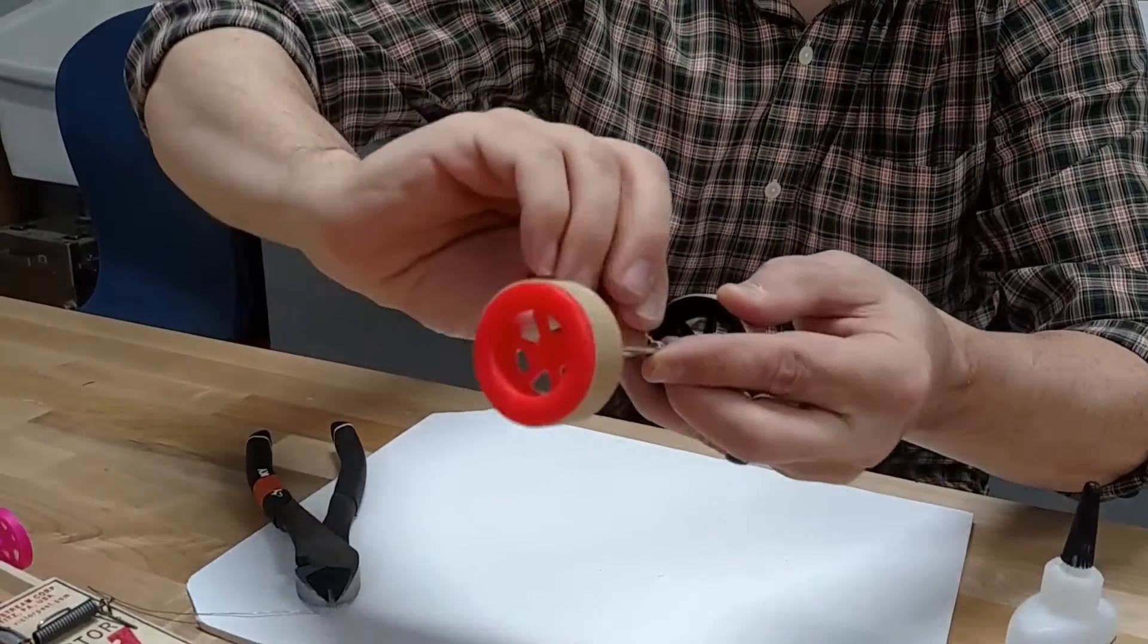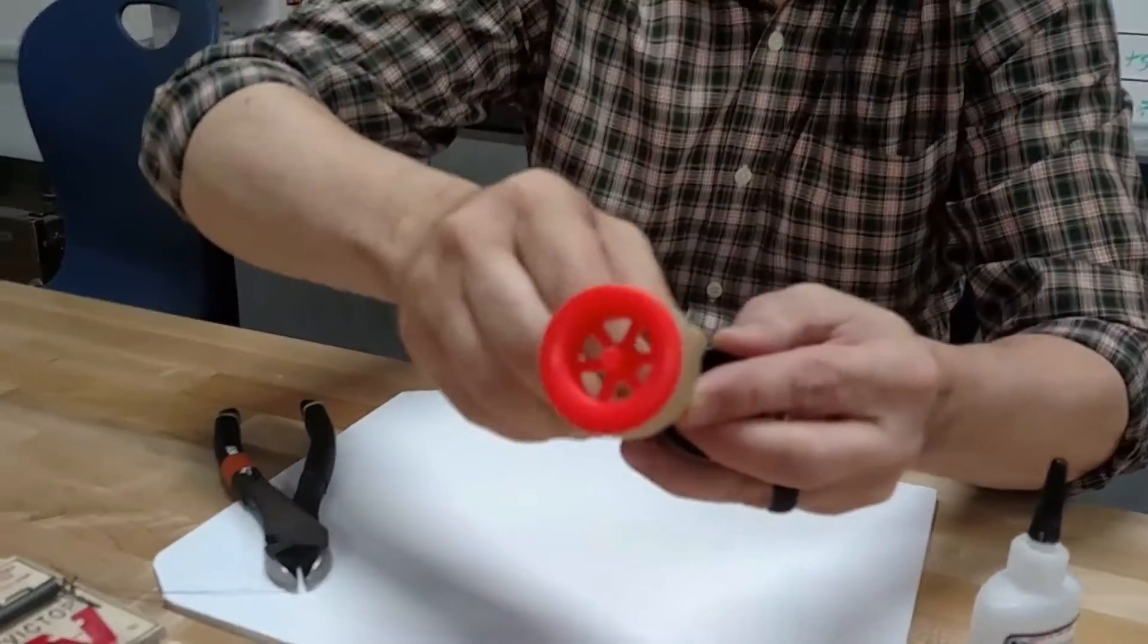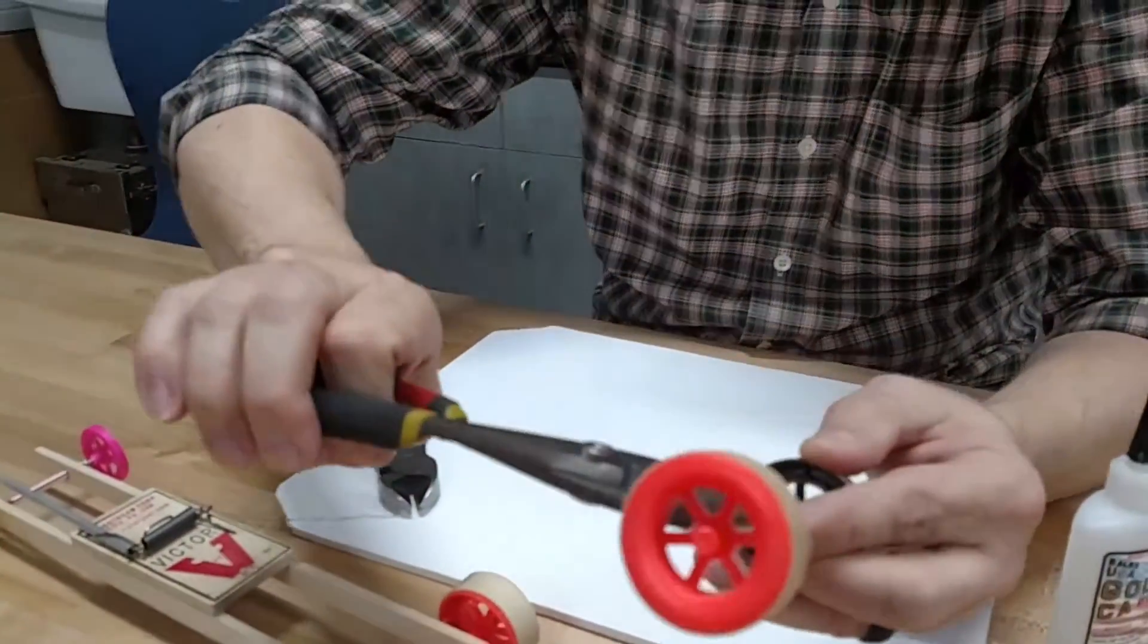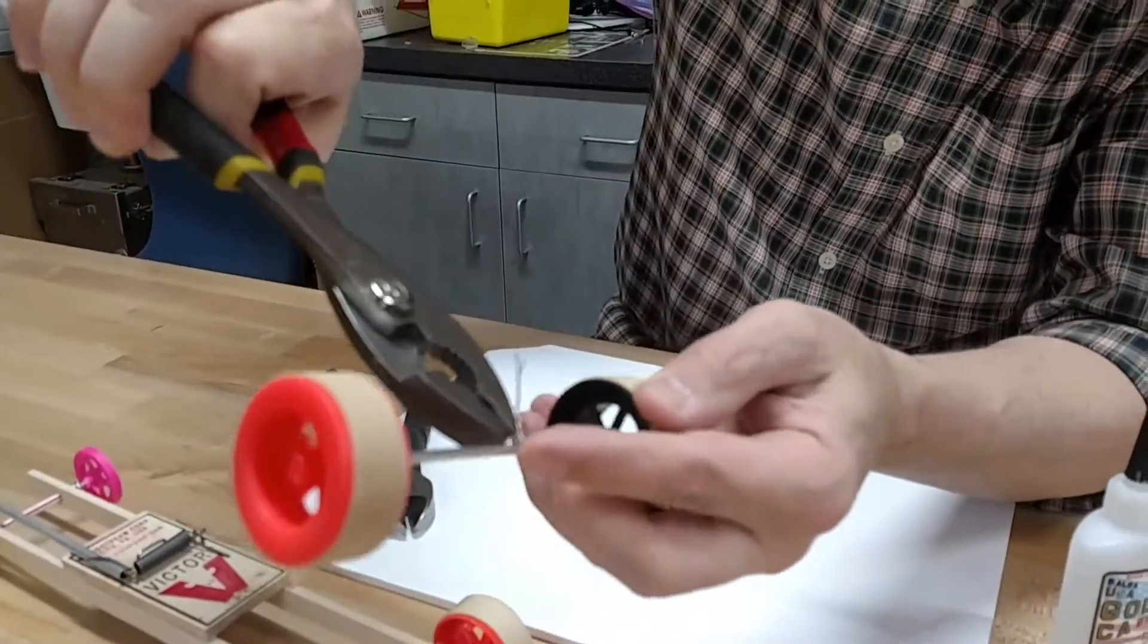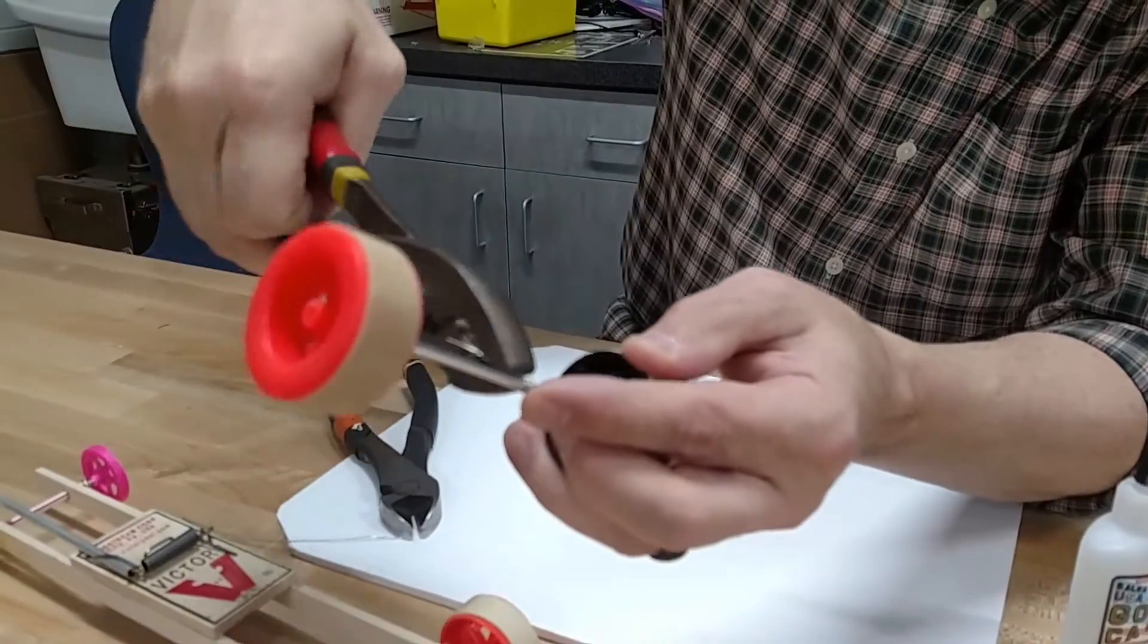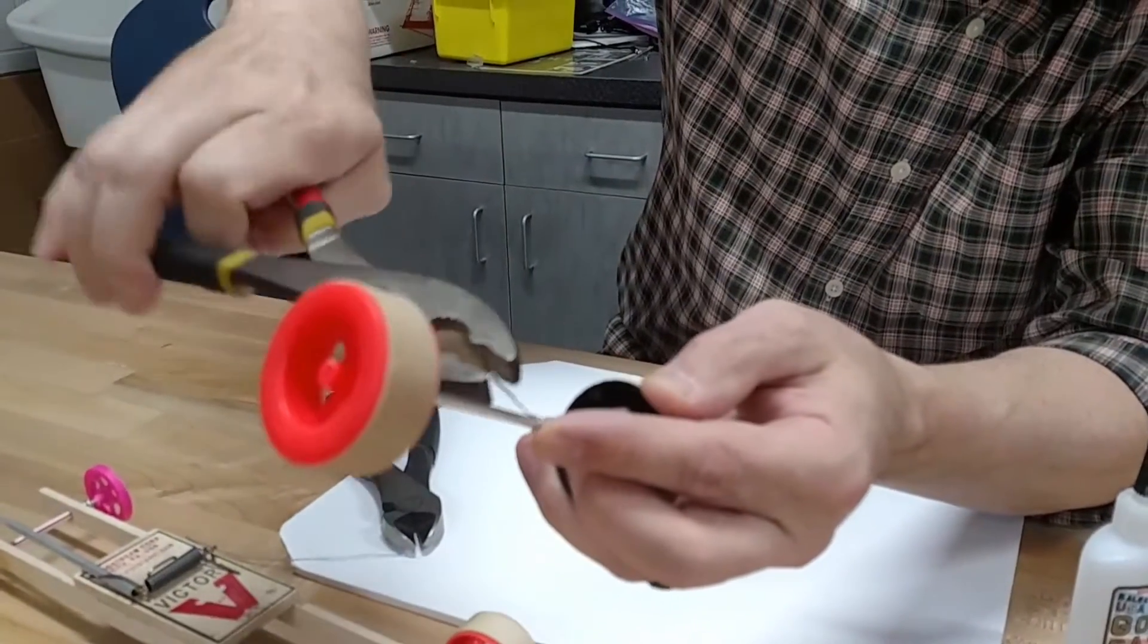The pliers. If I grab these pliers, I can kind of get a little close to the axle and twist it so it's tight.